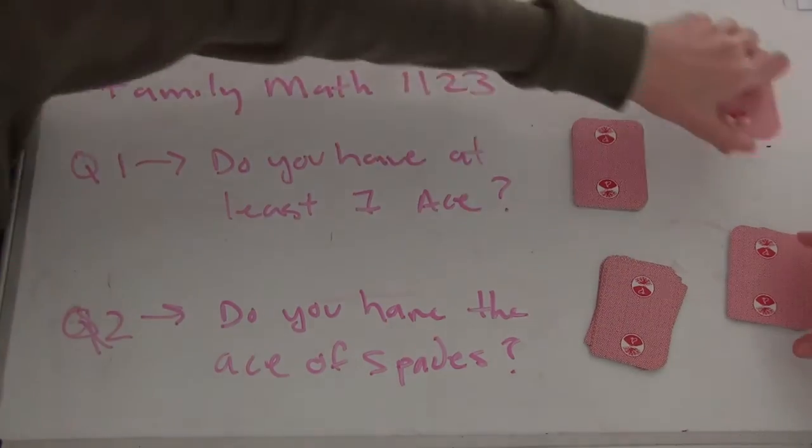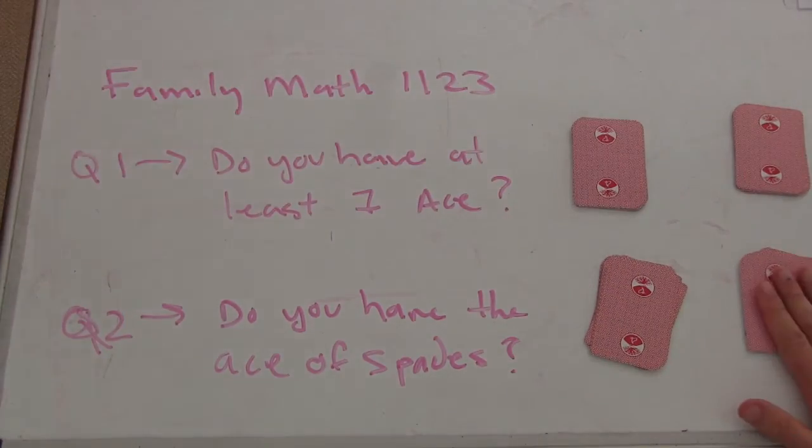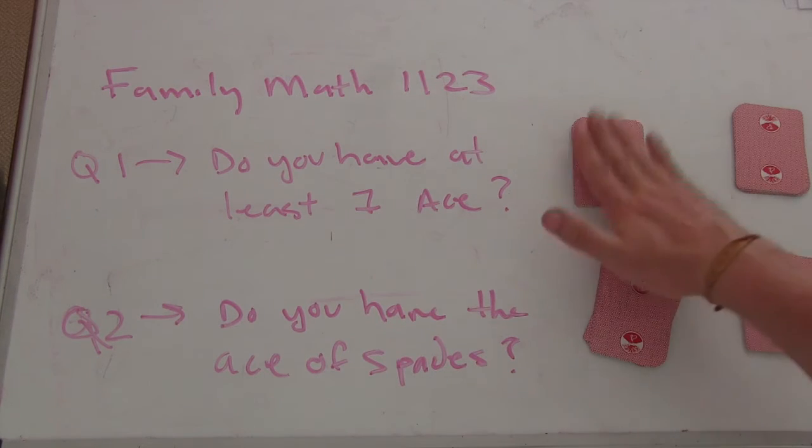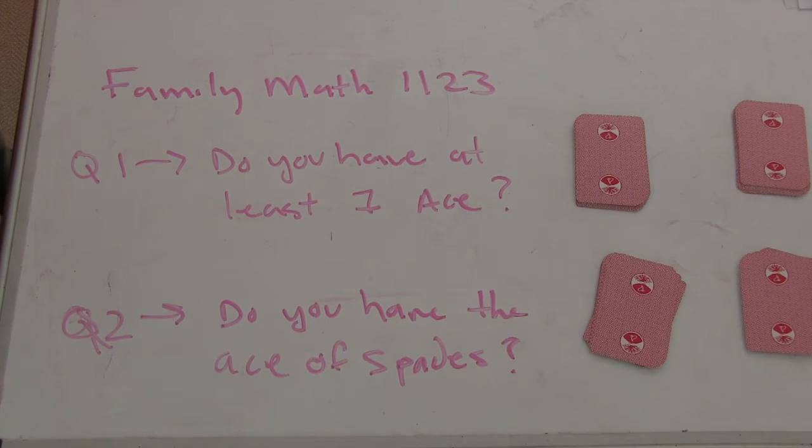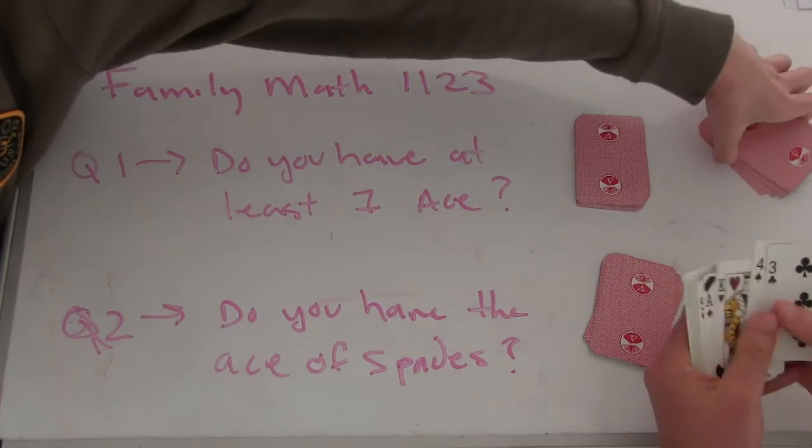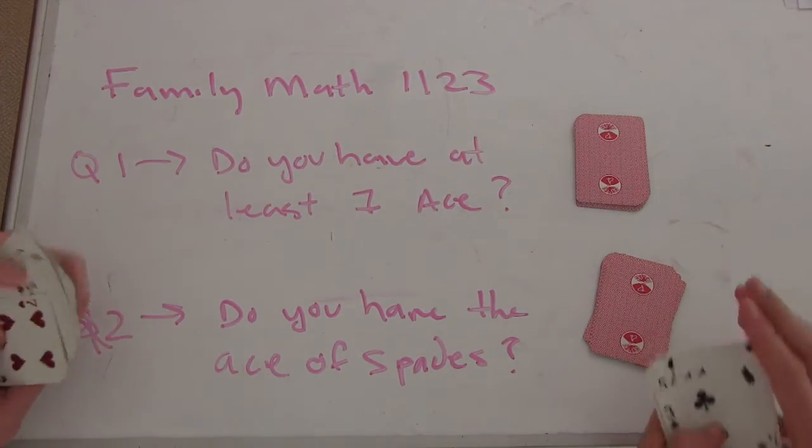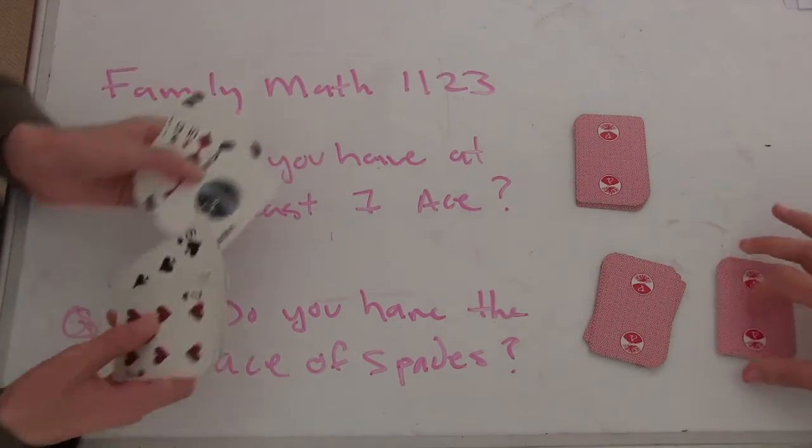Should I move them right next to each other? Yeah. So this person would say yes, I have at least one. This person would say no, no, yes. And then the second question is, do you have the ace of spades? I think this person had one. Yep. There's the ace of diamonds, so that person has the ace of spades.